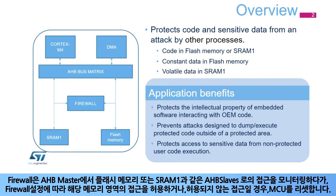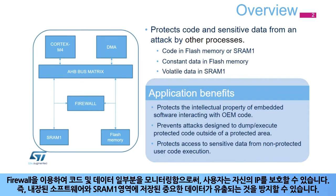Depending on the firewall configuration, it allows the access to the memory segment or resets the MCU if not allowed. Having part of the code and data monitored by the firewall allows users to protect their IP, meaning a third party's intellectual property of embedded software can be protected against code dumping, along with any sensitive data stored in SRAM1.